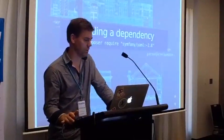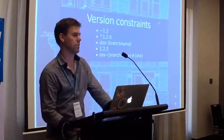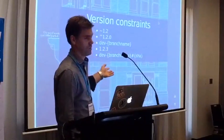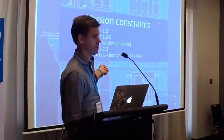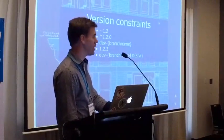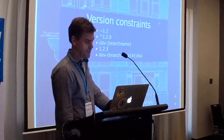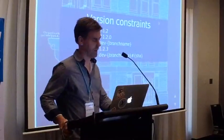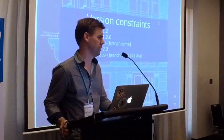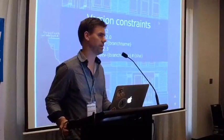To add a dependency you use composer require, give the namespace and package name, and a version constraint. The version constraints follow SemVer. The tilde operator says I want anything compatible with 1.2 — it'll go up to 1.44 or whatever, but it won't take you to 2.0 automatically, maintaining backwards compatibility. The caret operator on 1.2.0 says I want anything compatible with 1.2.0 but starting from 1.2.0. For example, if you know up until alpha 11 there was a bug, you can use the caret operator to maintain SemVer but start from that particular point.